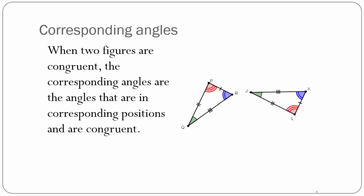Corresponding angles: when two figures are congruent, the corresponding angles are the angles that are in corresponding positions and are congruent. In this picture, the green angles match in color, meaning they are congruent — they each have one arc. The blue angles are congruent because they have two arcs and are the same color. The red angles are congruent to each other because they have three arcs and are the same color.